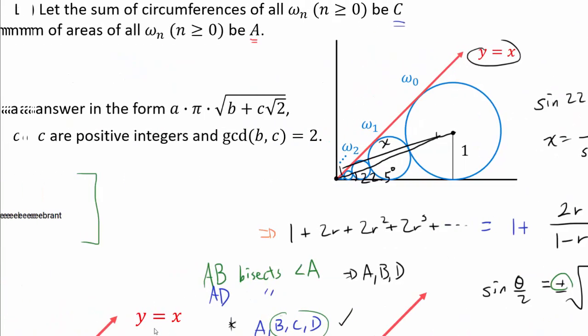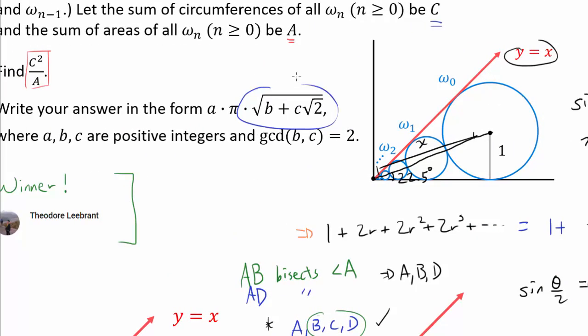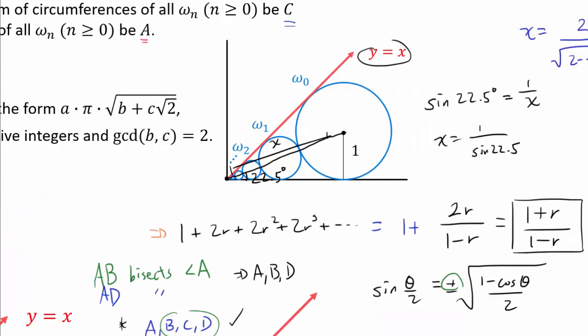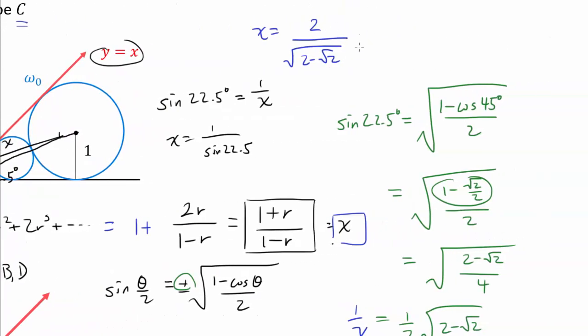And because we want our final solution such that every square root is in the numerator of the fraction, let's rationalize this. One way of doing it here is to multiply by √2 + √2. Because if we do so, we are going to have square root of 2 at the bottom.